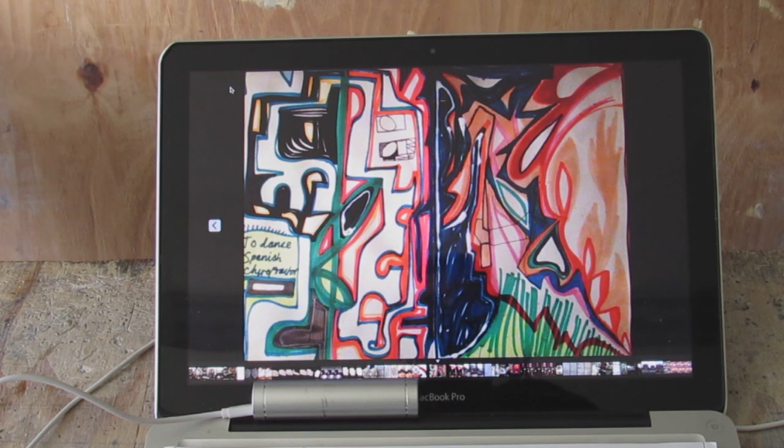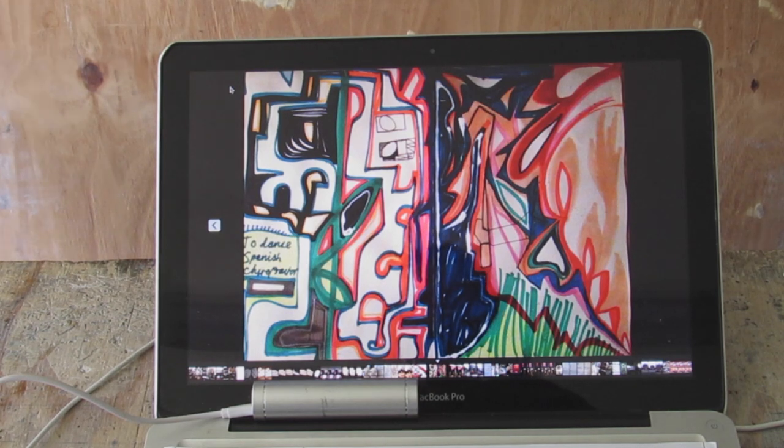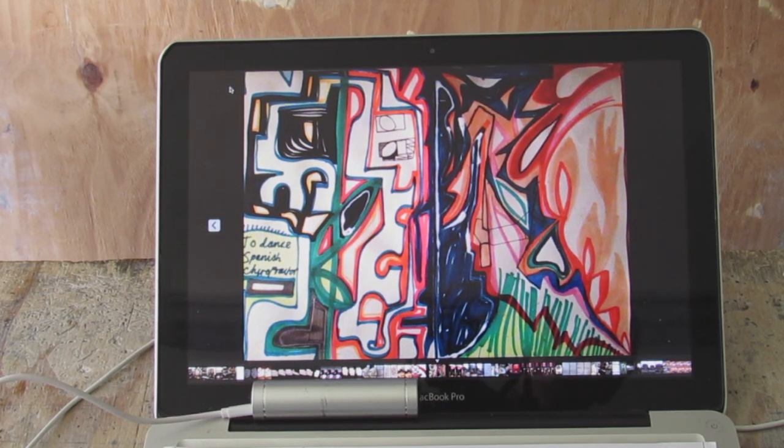So the first thing we'll do is take a look at his design. This is the design that Will sent me and I love it for its vibrancy and movement and color, but the problem with it is it's going to be very difficult to interpret that in glass, certainly at a beginner's level.